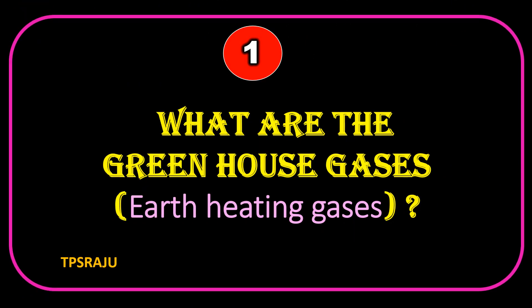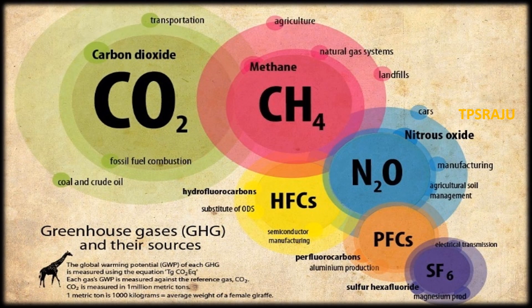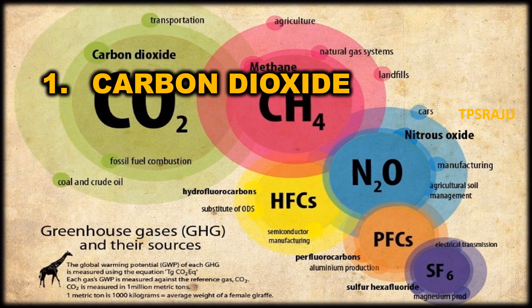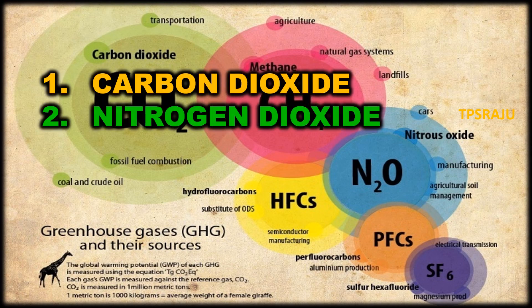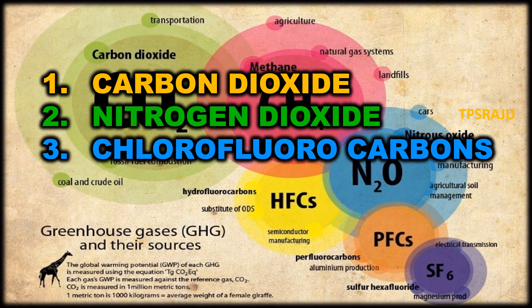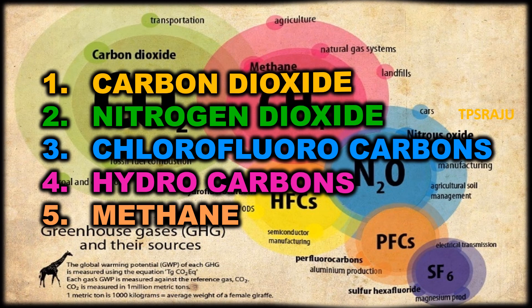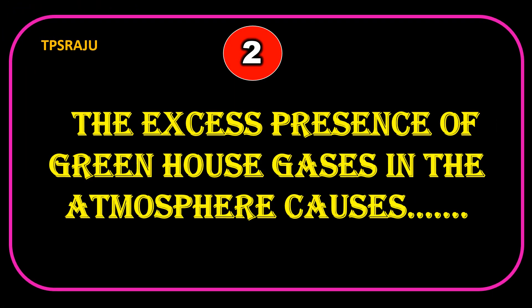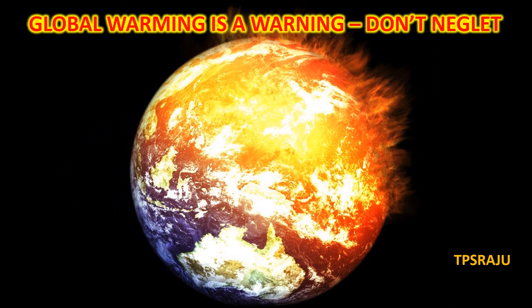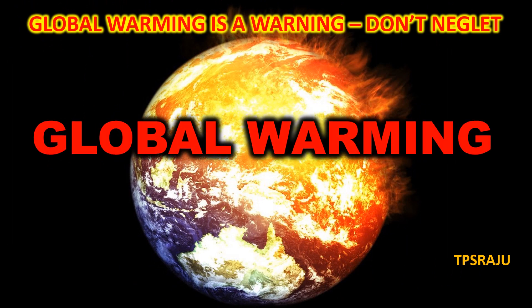What are the greenhouse gases or earth heating gases? Carbon dioxide, nitrogen dioxide, chlorofluorocarbons, hydrocarbons, methane, etc. The excess presence of greenhouse gases in the atmosphere causes global warming.